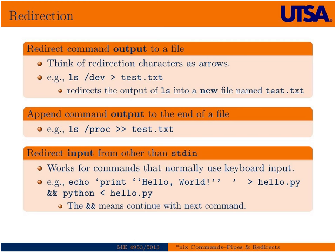So we've already done a little bit of redirecting, although I didn't introduce it formally. The redirect command, which is this symbol here, which you've seen me use already in some of the other lectures, you can think of it as an arrow. So in this case we're going to list the contents of /dev and redirect it into a file test.txt.